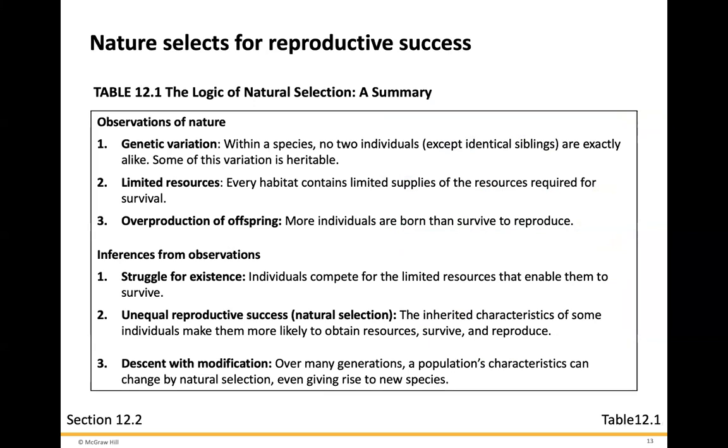The logic of natural selection is that nature is going to select for reproductive success. The observations of natural selection include genetic variation within a species — no two individuals except identical siblings are exactly alike, and some of this variation is heritable. Every habitat contains limited supplies of resources required for survival. More individuals are born than survive to reproduce.